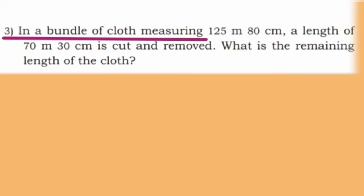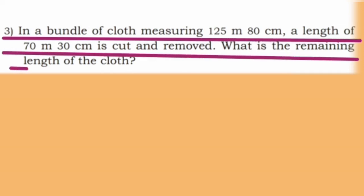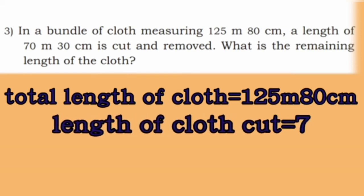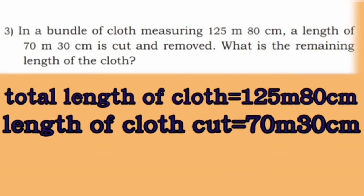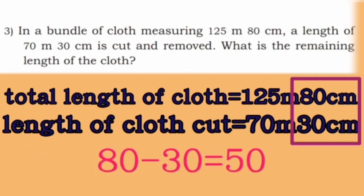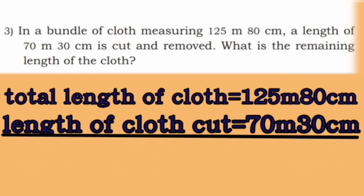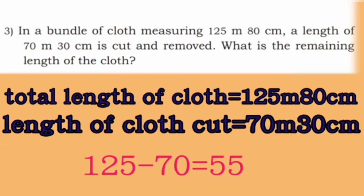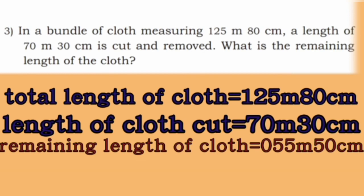Now third one: In a bundle of cloth measuring 125 meter 80 cm, a length of 70 meter 30 cm is cut and removed. What is the remaining length of the cloth? Total length of cloth is 125 meter 80 cm; length of cloth cut is 70 meter 30 cm. First subtract centimeters: 80 minus 30 is 50. Next subtract meters: 125 minus 70 is 55 meter. So the remaining length of cloth is 55 meter 50 cm.